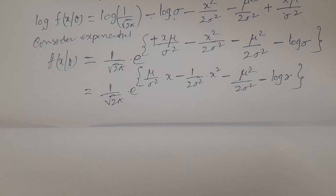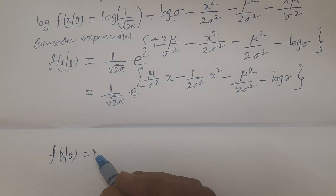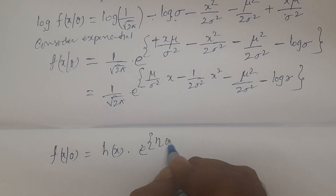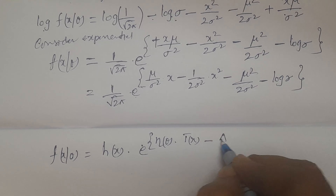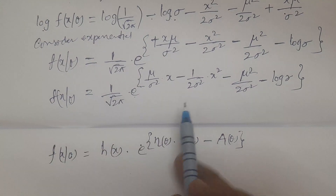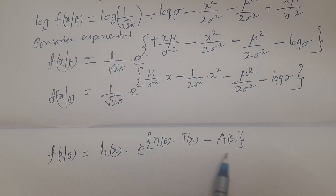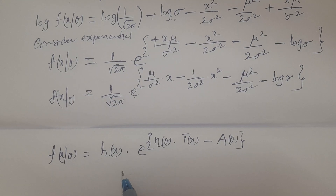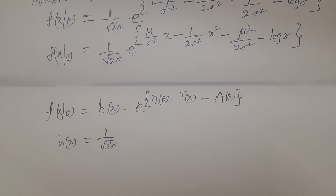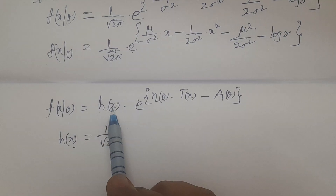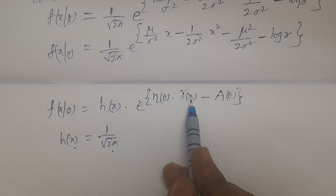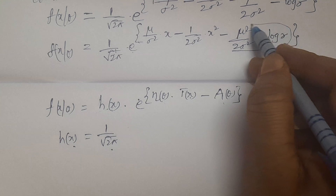Now I write the form of the exponential family of distributions: f(x, θ) = h(x) · e to the power of [η(θ)·T(x) − A(θ)]. Comparing these two expressions, h(x) = 1/√(2π). Here we have two η functions and two T functions, and A(θ) involves the two parameters.